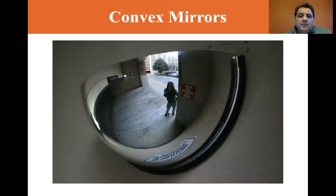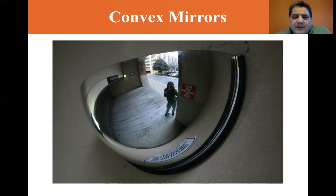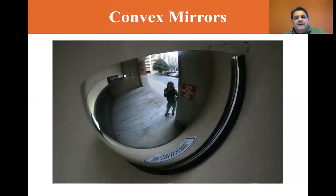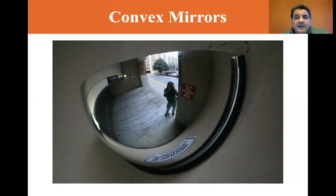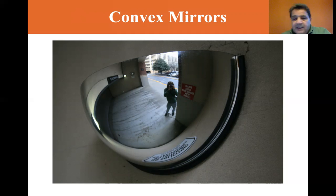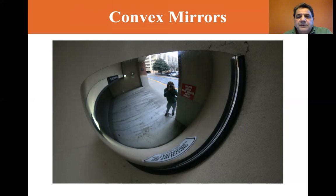Here is a good example of a convex mirror — this one is in a parking garage. You can use it so that you can see oncoming cars and avoid hitting them. There are other uses for convex mirrors as well.